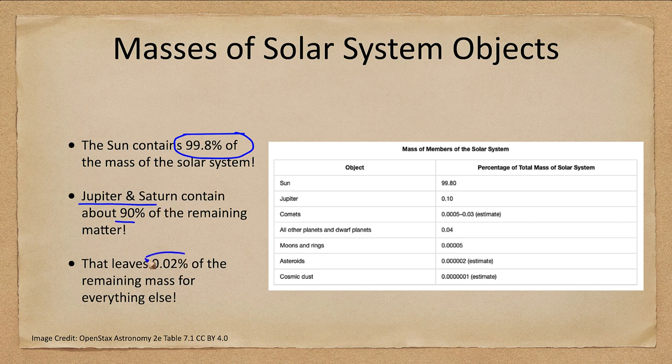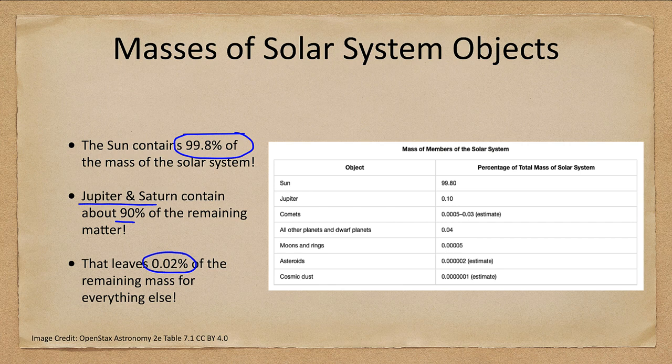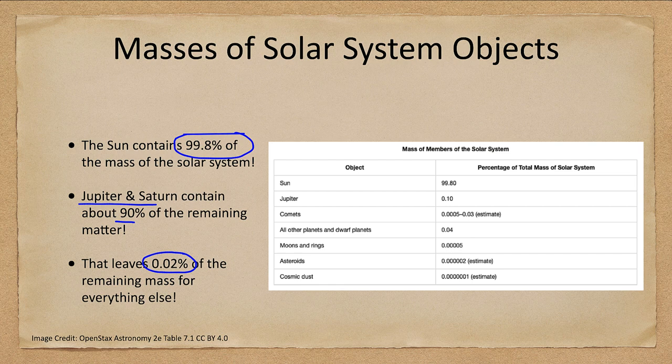And that leaves 0.02 percent of the remaining mass for everything else. That's all of the other planets, so the other six planets. That includes all of the comets, the asteroids, the moons, all of the other debris that we'll be spending a lot of time talking about, but is actually a very small percentage of the mass of our solar system.